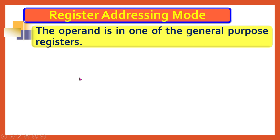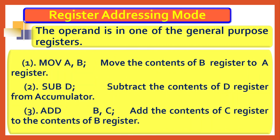Register addressing mode: as the name suggests, a general-purpose register provides the data — any one of the registers from A to L, or a register pair. For example, MOV A, B means register B provides data to A. SUB D means A minus D. ADD B means A plus B. When an internal register from A to L provides the data, it is called register addressing mode.